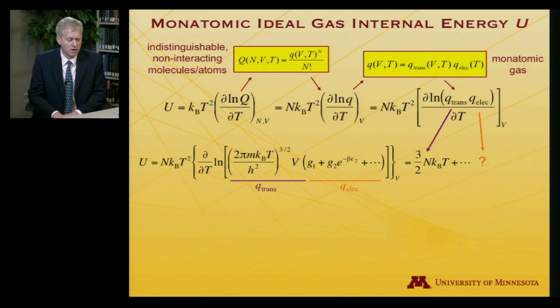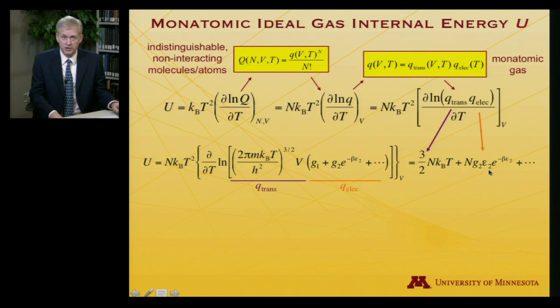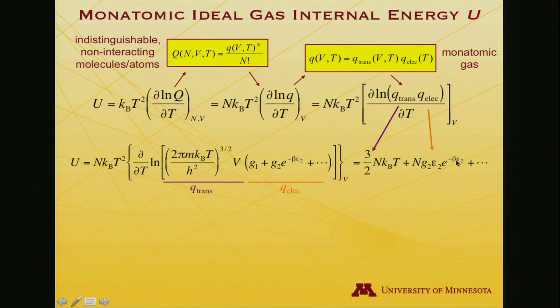That's the electronic part. That's the result of taking the derivative properly for the translational part. And now comes the question: what happens when we take the derivative with respect to the electronic portion? I'm going to let you work on that one, and then we'll come back. Hopefully you throttled that partial derivative into submission, and you discovered that the missing term is N times the degeneracy of the first excited state times the energy relative to the ground state for that state.